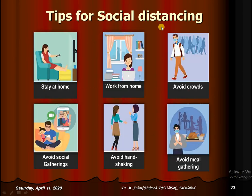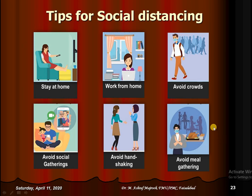Tips for social distancing: staying home is best, but if you must work, try to work from home. Avoid crowds, social gatherings, handshaking, and meal gatherings such as tea parties or marriage parties. The government has taken actions on their side, but social distancing is also a citizen's responsibility. The government should raise awareness about social distancing. This is the key intervention for the population at risk.